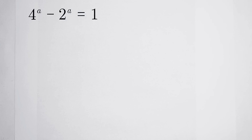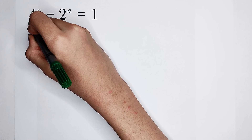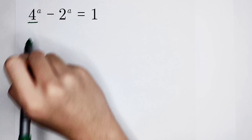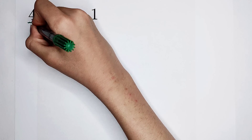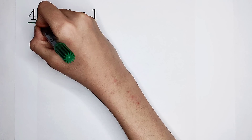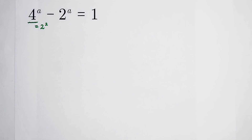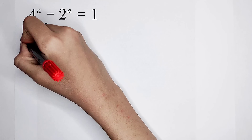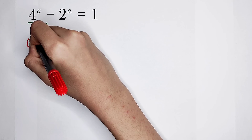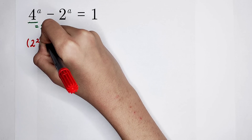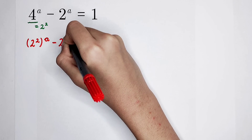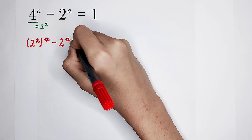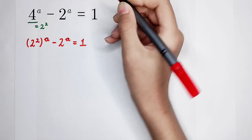How should we solve it? You must have noticed that 4 is the square of 2. So 4 is 2 squared, and then it will become 2 squared to the power of a, minus 2 to the power of a, is equal to 1.